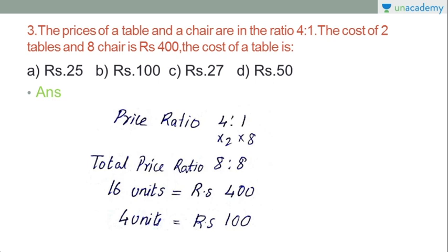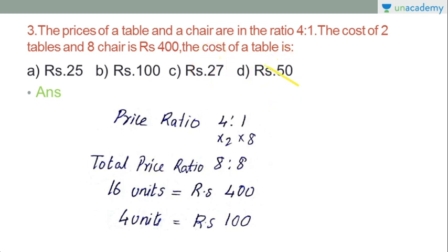There are 4 units for the table because the ratio is 4 to 1. So 4 units divided by 16 units times 400. That works out: one unit equals 25. So 4 units equals 100. The cost of the table is Rs. 100.